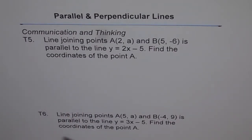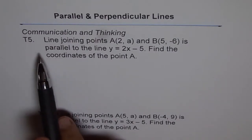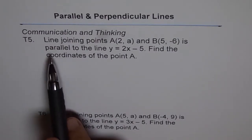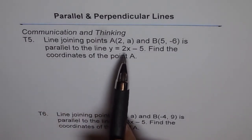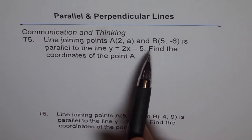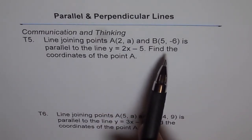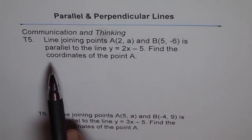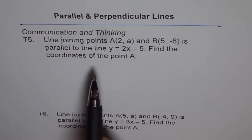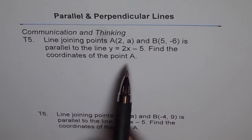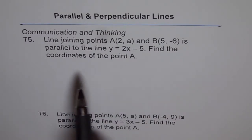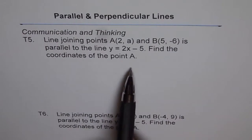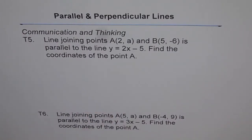T5 is: the line joining points A(2, a) and B(5, -6) is parallel to the line y = 2x - 5. Find the coordinates of point A.